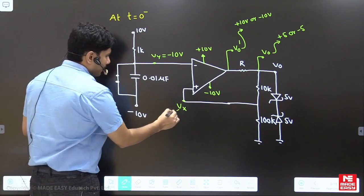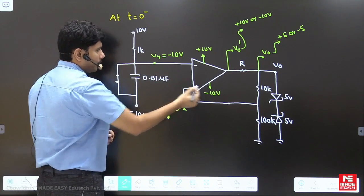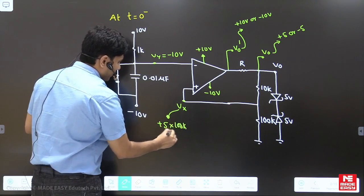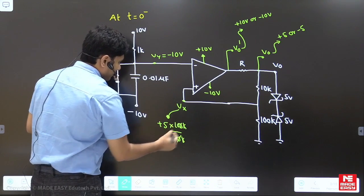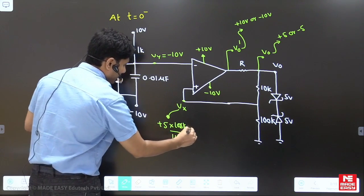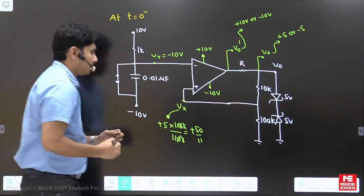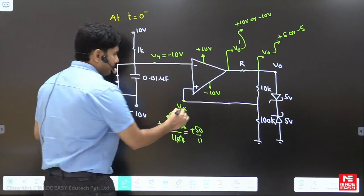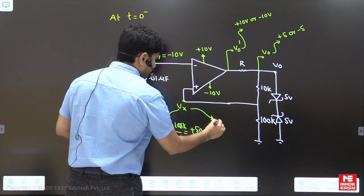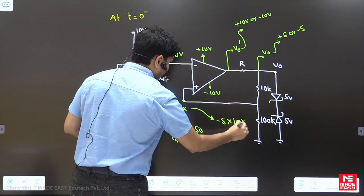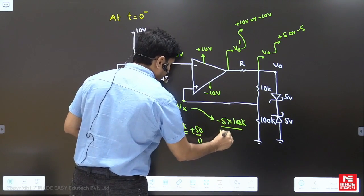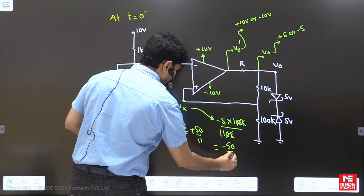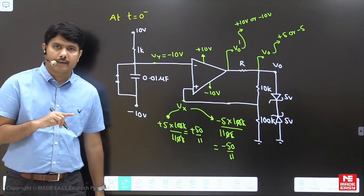Applying the voltage divider rule: if V₀ = +5V, then V_x = +5 × (100k / 110k) = +50/11 volts. If V₀ = −5V, then V_x = −5 × (100k / 110k) = −50/11 volts. So V_x is either +50/11 or −50/11.